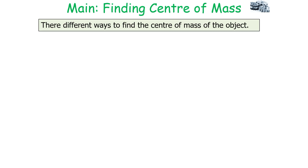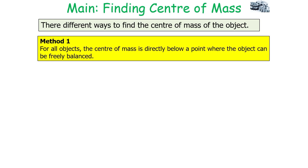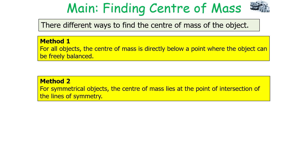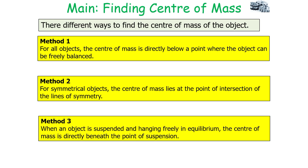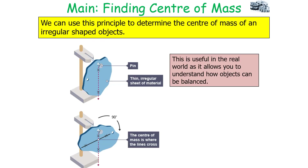To summarise, there are three different methods to find the centre of mass of an object. For all objects, the centre of mass is directly below a point where the object can freely balance. For symmetrical objects, the centre of mass lies at the point of intersection of lines of symmetry. When an object is suspended and hanging freely in equilibrium, the centre of mass is directly beneath the point of suspension. We can use these principles to determine the centre of mass of an irregular shaped object, which is useful in the real world for understanding how an object can be balanced.